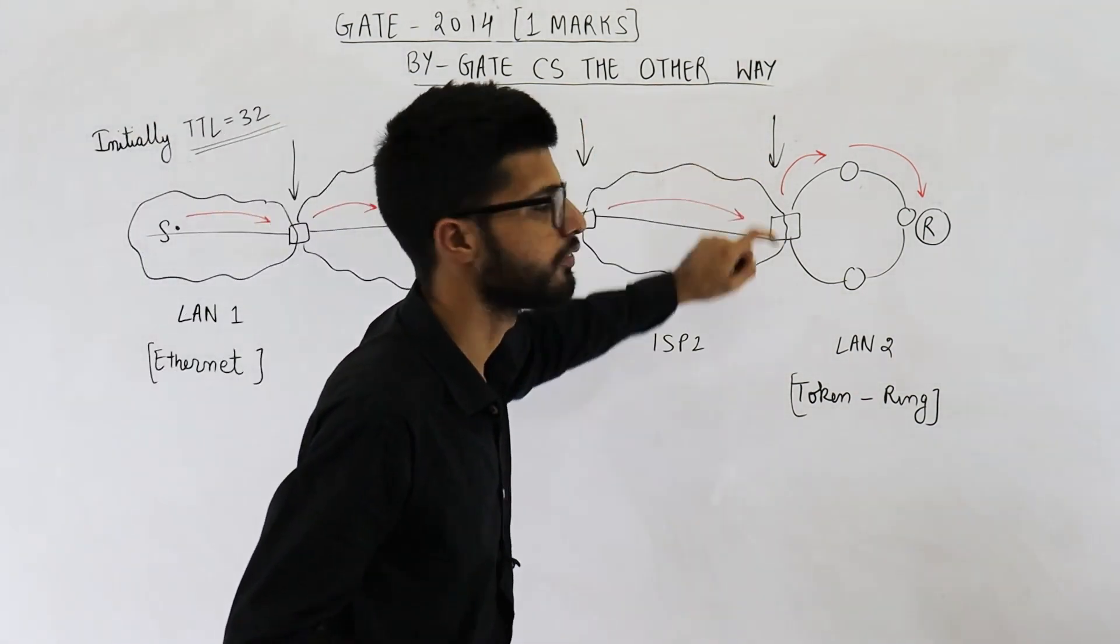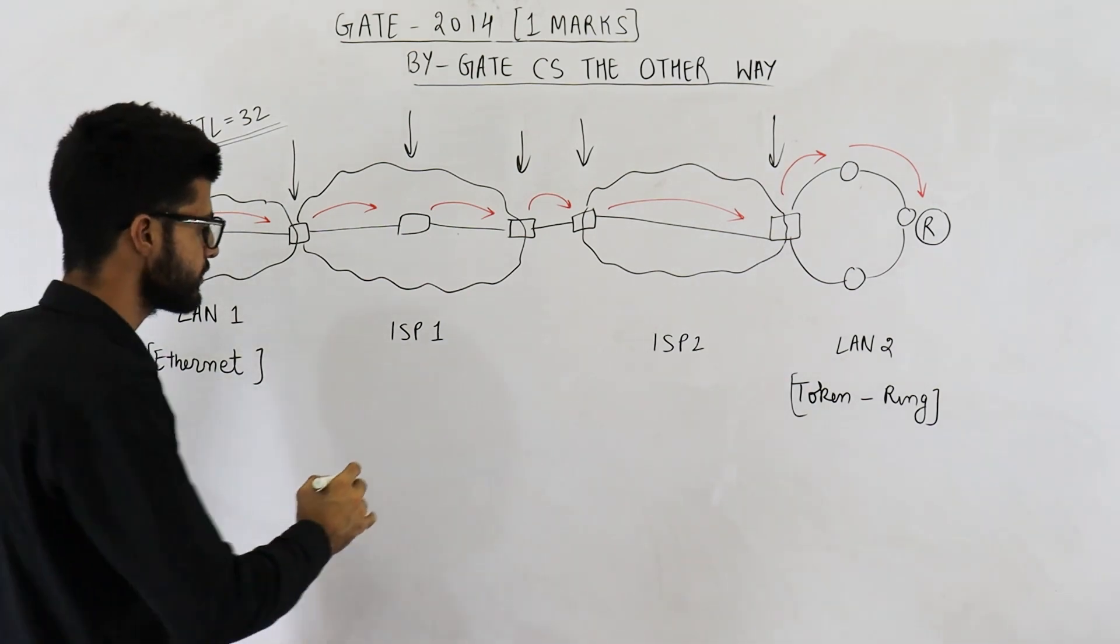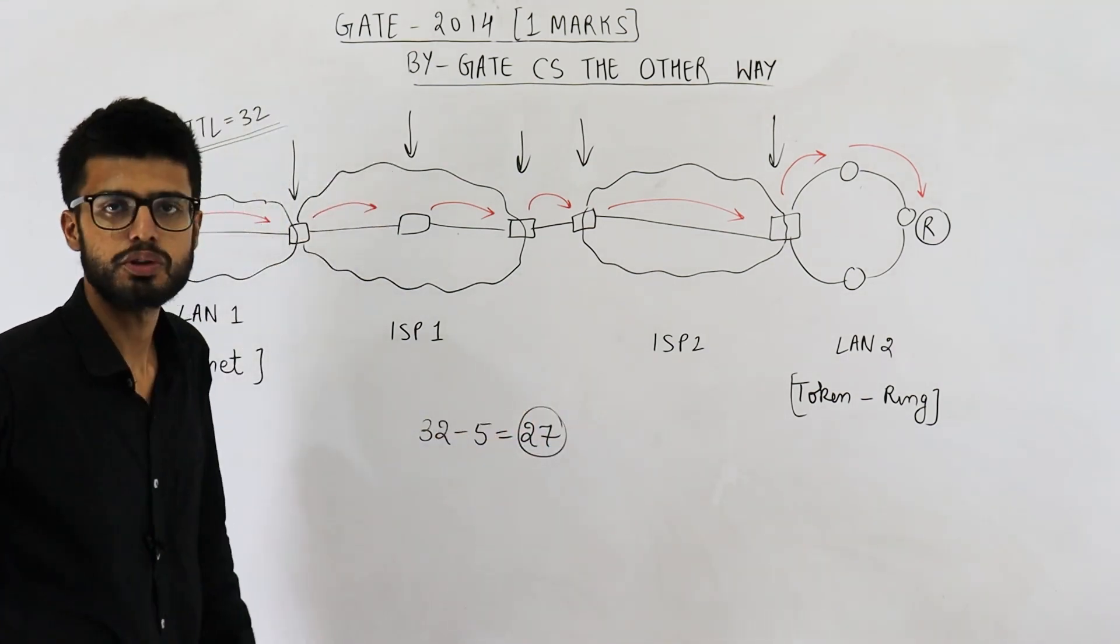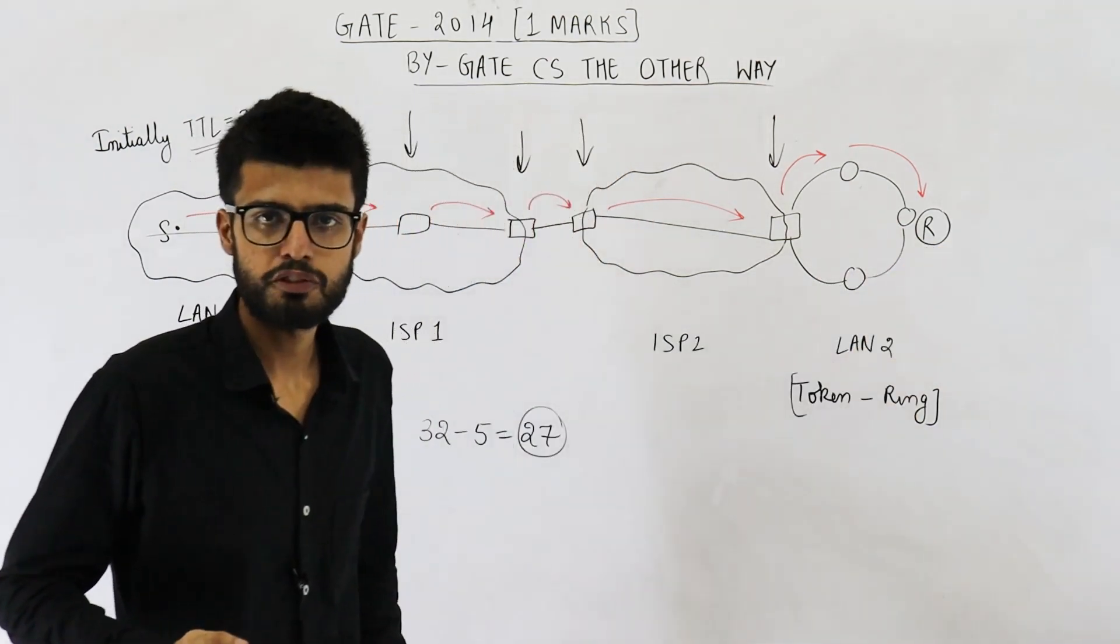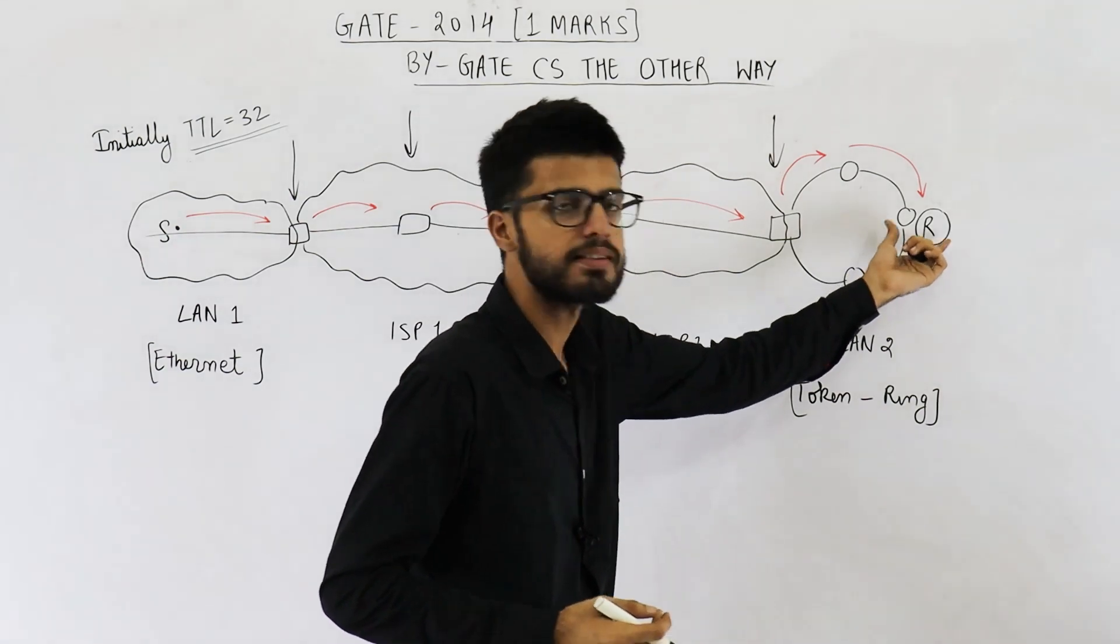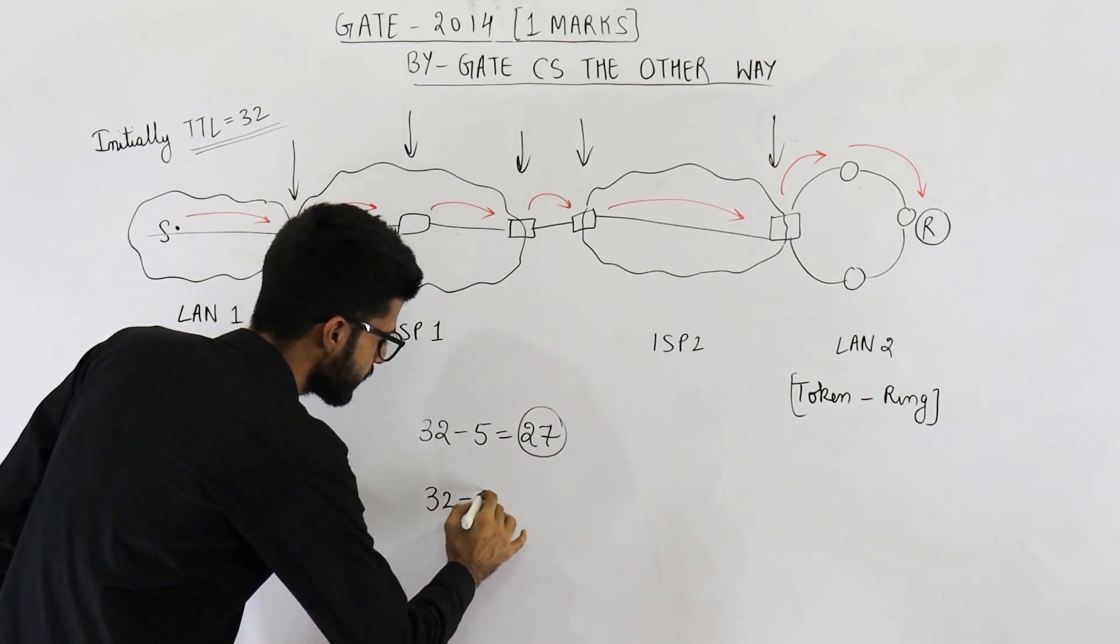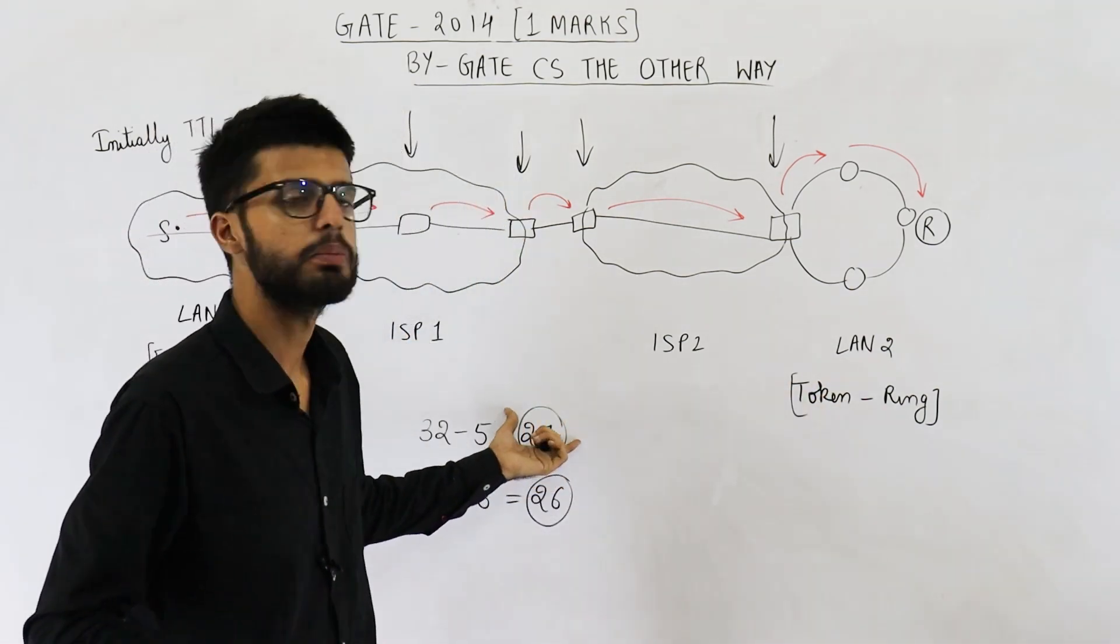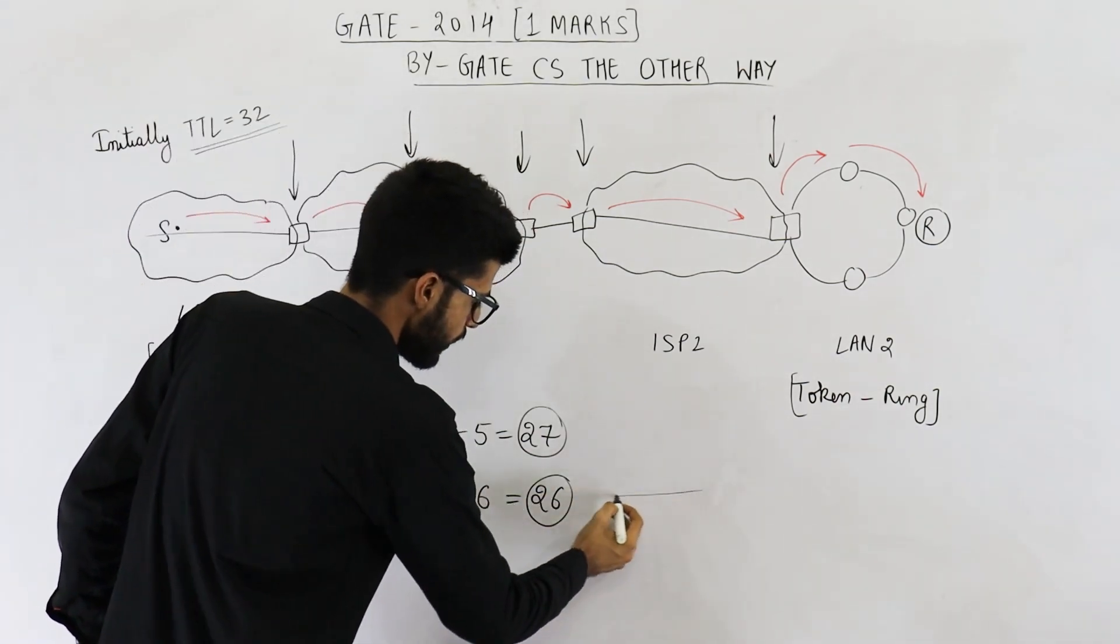Let us see what is the maximum possible value of TTL when receiver gets it. One, two, three, four, five. We have decremented the value five times. Initially, it was 32. So, it seems as if answer must be 32 minus 5, which is 27. But there is a small confusion. Some books say that receiver also decrements the value of TTL and some book says receiver will not decrement the value of TTL. If receiver decrements the value of TTL, then we decrement total six times. That means in that case answer will be 32 minus 6, which is 26. If receiver does not decrement the value of TTL, then answer will be 27. And in the official answer key for gate exam of 2014, answer is 26.